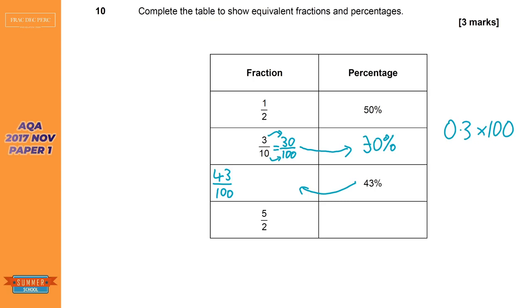Okay. With this one here, I probably would convert it first to a mixed number. So five divided by two is two whole ones and one remainder. So it's two and a half. And we know that one is 100%. So two would be 200%. And a half is 50%. So it would be 250%.